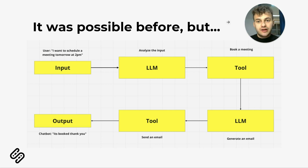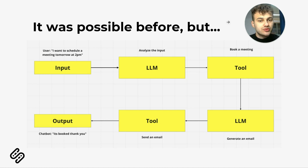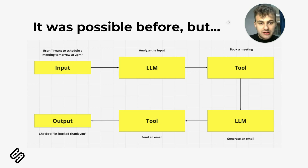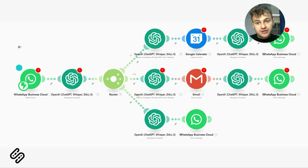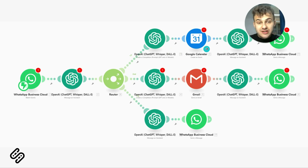Previously, if we had a query like 'I want to schedule a meeting tomorrow at 2 PM,' we had an LLM that analyzed the input, then a tool that booked the meeting like Google Calendar, then another LLM, then a tool again, and the output. It could look like a blueprint from Make.com where you have everything step-by-step divided — LLM, then some logic, then another LLM, then a module in Make.com which helped create an event or send an email.